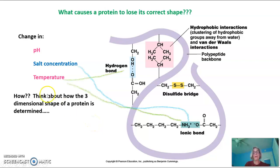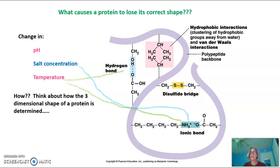Temperature could also disrupt both ionic bonds and hydrogen bonds, because as you increase temperature, you increase kinetic energy. With an increase in kinetic energy, you get an increase in movement. That could disrupt these hydrogen and ionic interactions.